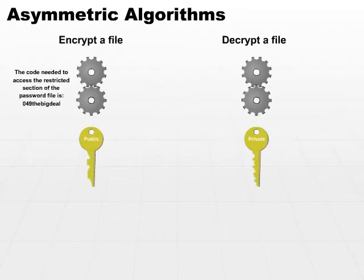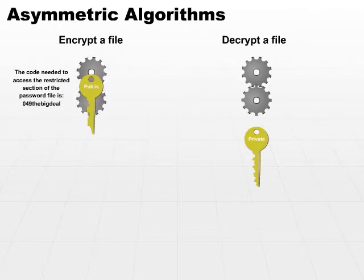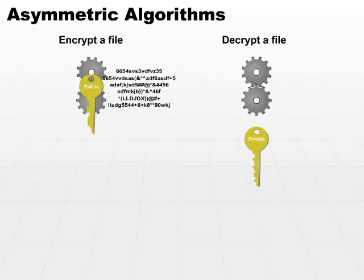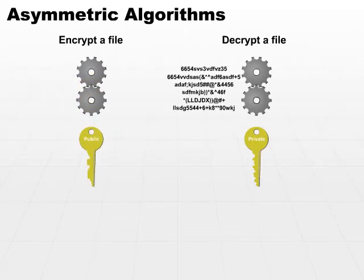Let's take a look at the process. Our asymmetric algorithm takes plain text — we have our plain text input. The algorithm uses the receiver's public key; everything is done in the context of the receiver. It takes the receiver's public key and encrypts the plain text, and we get our cipher text. We then send that to the receiver.